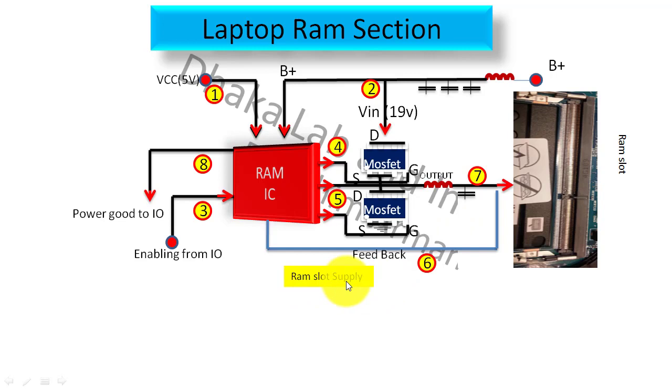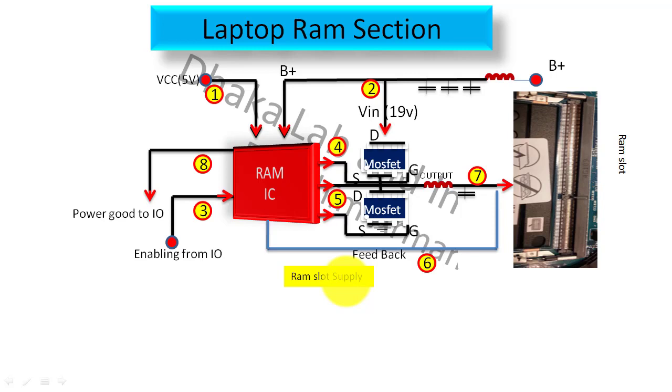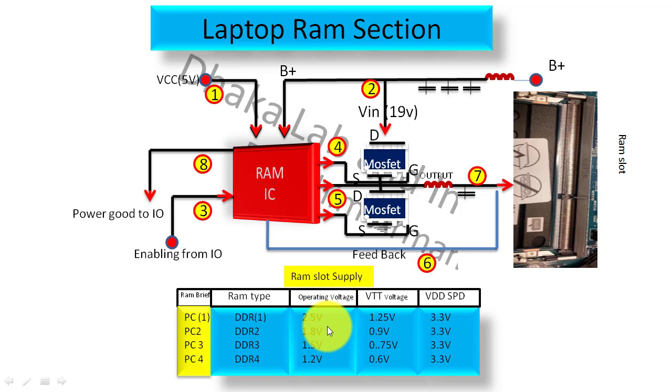There are many voltages and I have made a chart here showing how we will get those voltages. Here we can see how we will understand the RAM type. When we see DDR, that means DDR1 RAM, and there may be like PC. If we see these things, we can say this is DDR1 RAM.